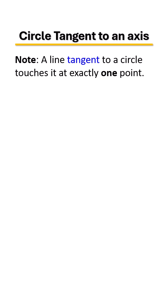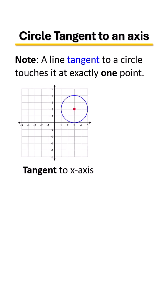A line tangent to a circle touches it at exactly one point. Here's an example of a circle tangent to the x-axis. It touches in that one point. From that point to the center, that is called your radius.